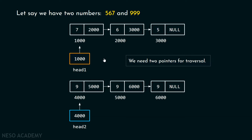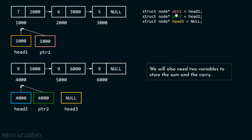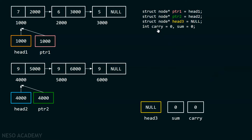Traversal is required as we have to add two digits at a time. For this purpose, I have declared two pointers: ptr1 and ptr2. Currently, ptr1 is pointing to the first node of this linked list and ptr2 is pointing to the first node of this linked list. There is one head3 pointer which is currently holding null — I want head3 to store the address of the first node of the resultant linked list. We will also need two variables to store the sum and the carry. I will create two variables: carry and sum, both currently holding the value zero.